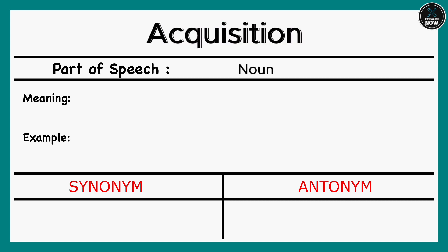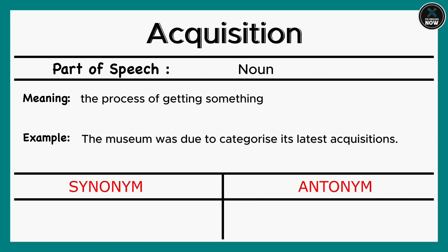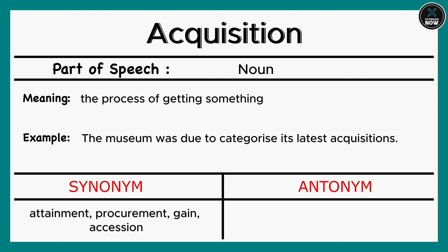Acquisition: The process of getting something. Example: The museum was due to categorize its latest acquisitions. Synonyms: Attainment, Procurement, Gain, Accession. Antonyms: Loss, Disposal, Elimination.